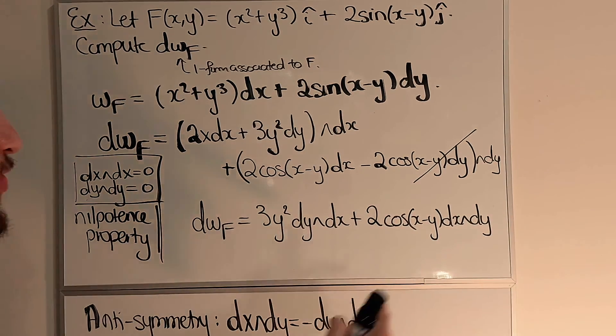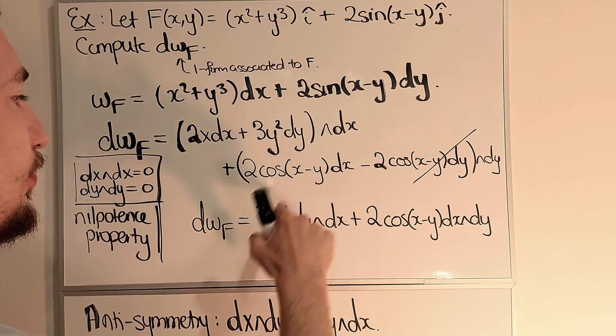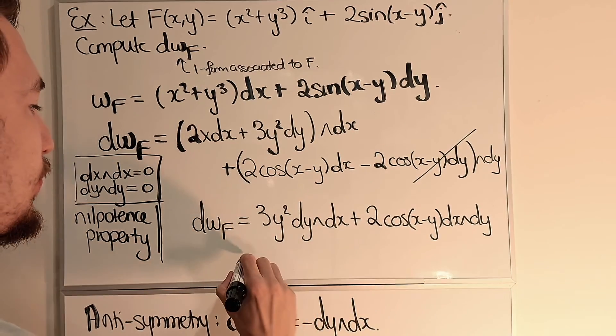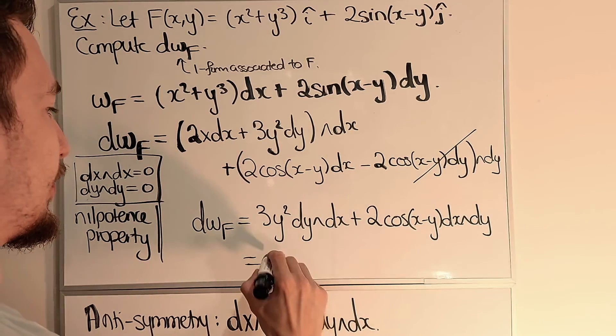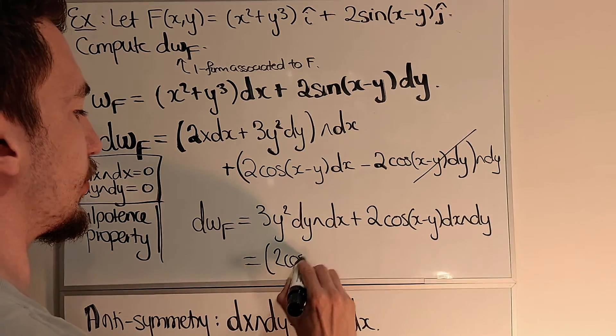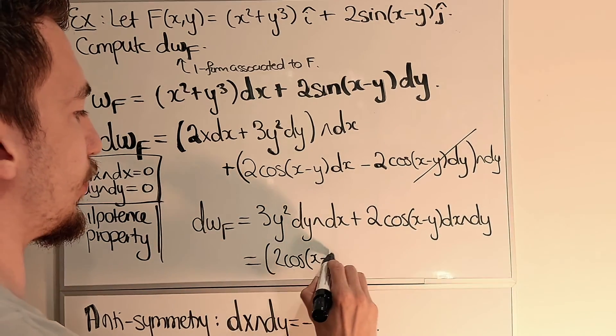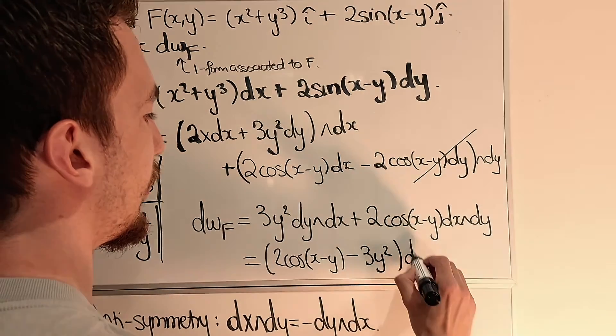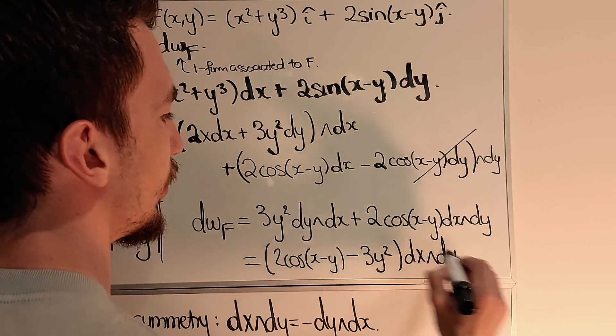That now allows me to write this term as -3y² dx∧dy. And the final answer is therefore just 2cos(x-y) - 3y² dx∧dy.